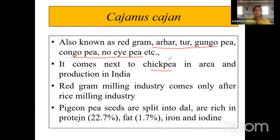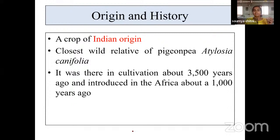Red gram milling industry comes only after rice milling industry, since the seed coat on the red gram seed is difficult to remove. Pigeon pea seeds are split into dal which is rich in protein, fat, iron and iodine. The area under pigeon pea in India is nearly 4 million hectares, but the productivity is very low. There is debate about the origin of pigeon pea — some textbooks say African origin, others say Indian origin. Both countries can be considered as origin, since wild species are found in both Africa and India.